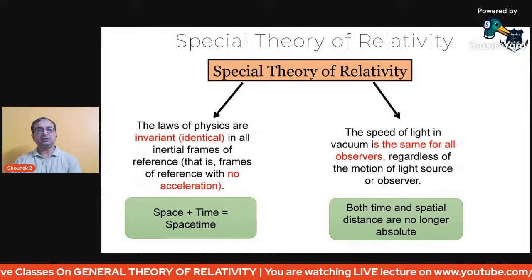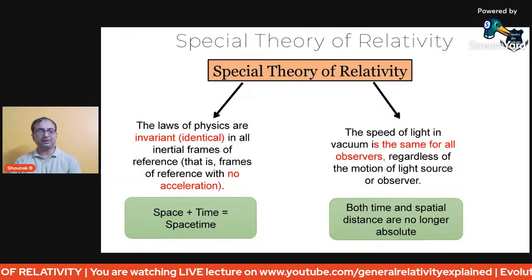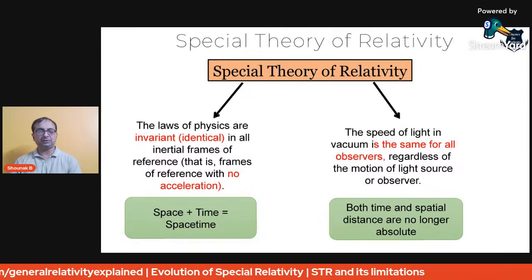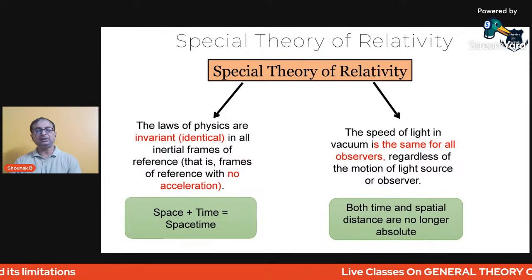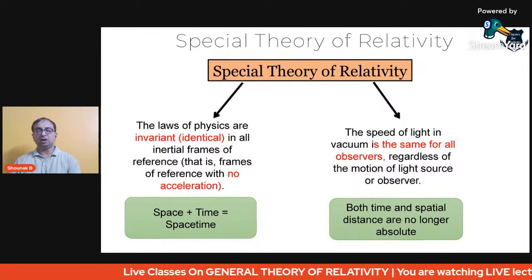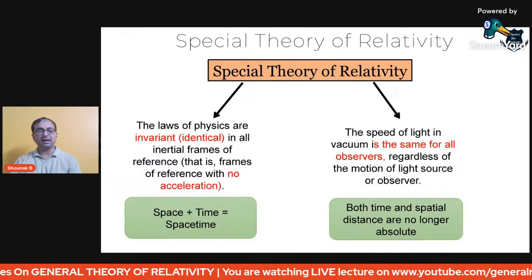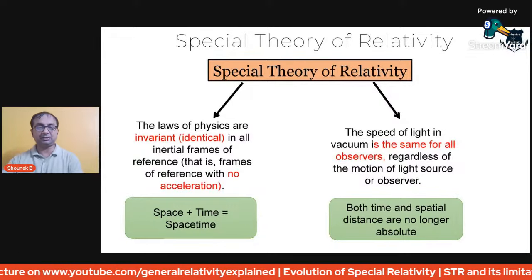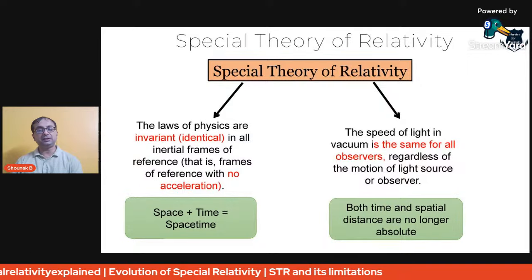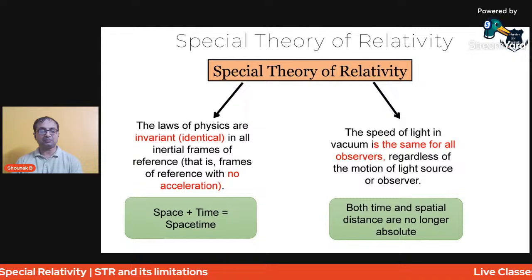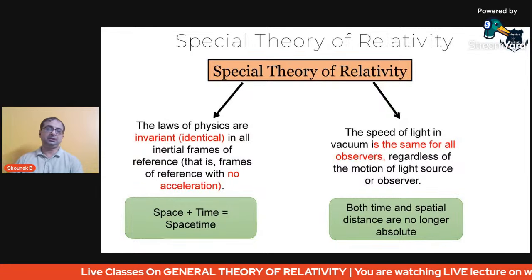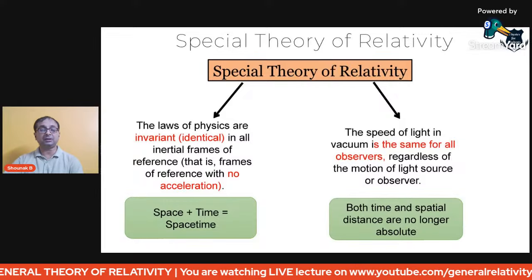The postulates of special relativity can be divided as follows: first, the laws of physics are invariant — that means in all inertial frames of reference with no acceleration, they remain identical. Second, the speed of light in vacuum is the same for all observers. The invariance of physical laws comes from Galilean transformation, while the constancy of light speed comes from experiment.